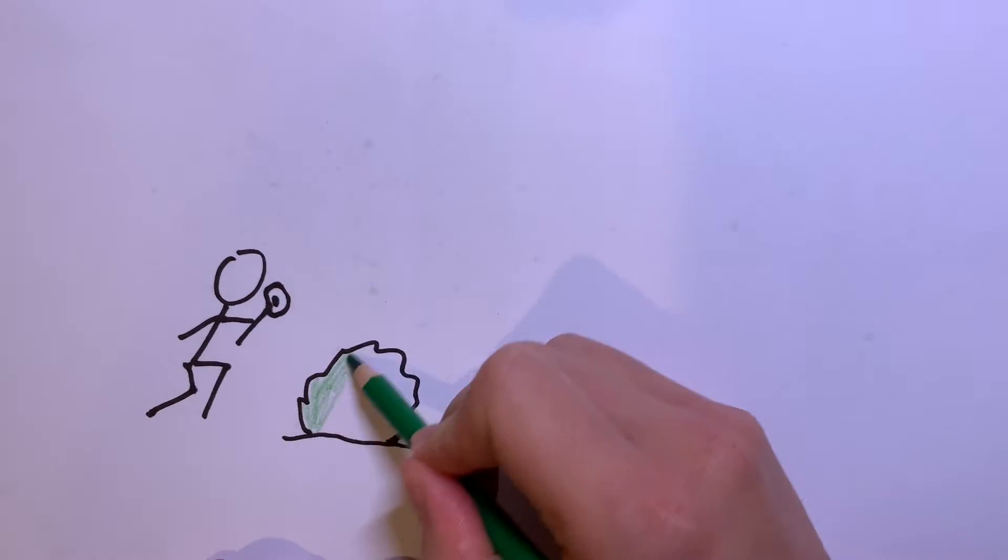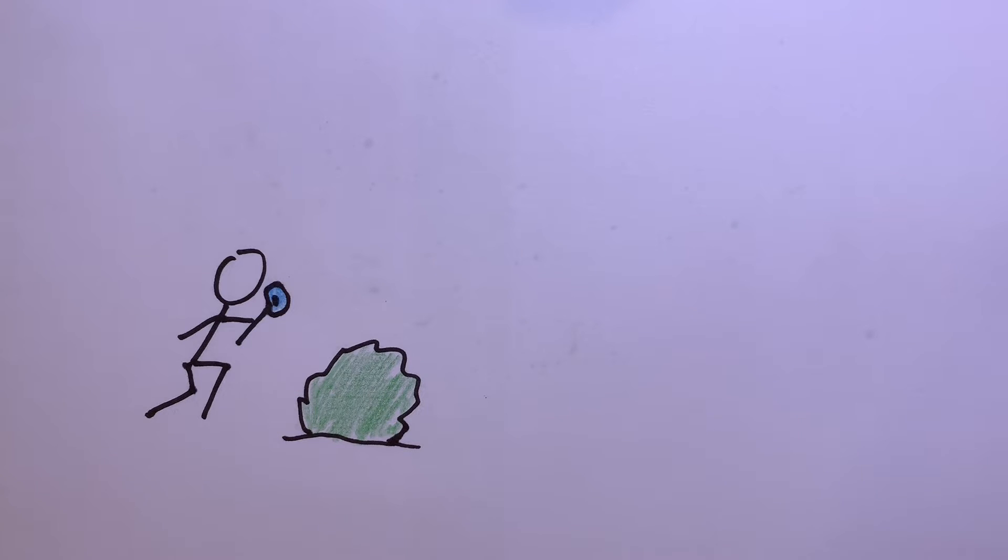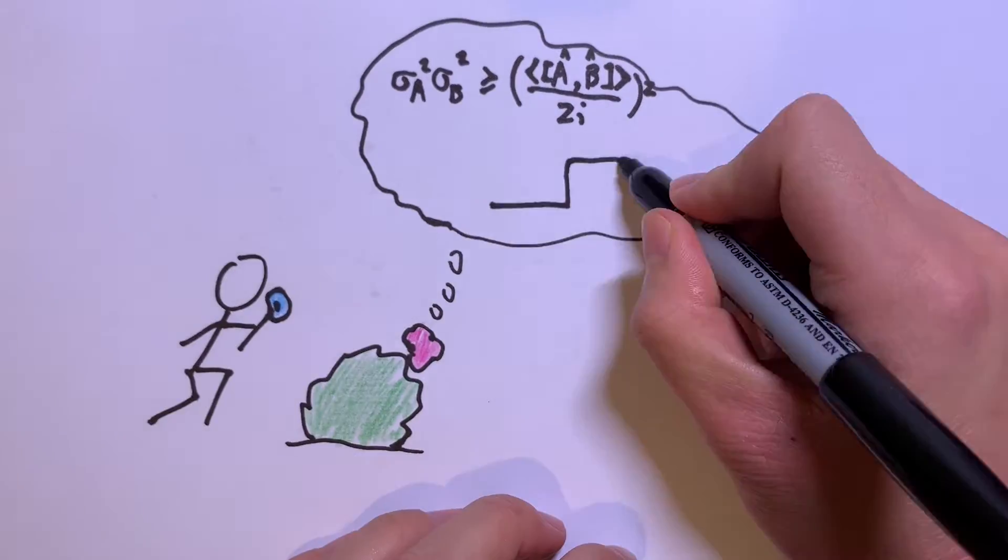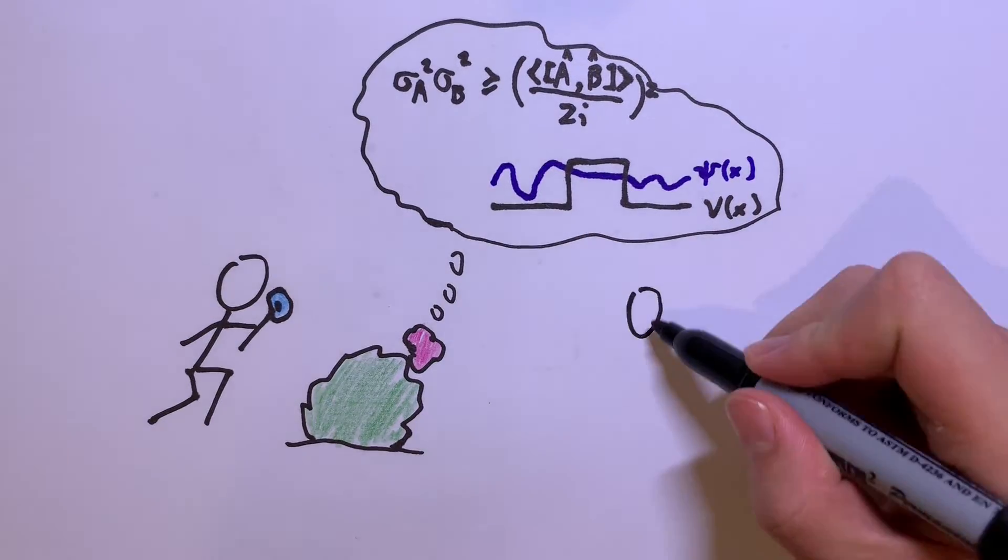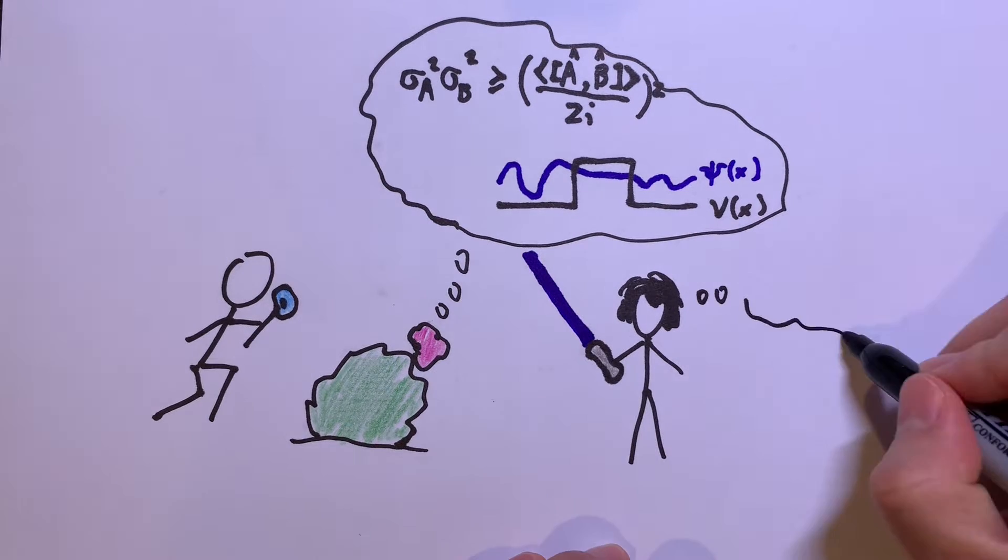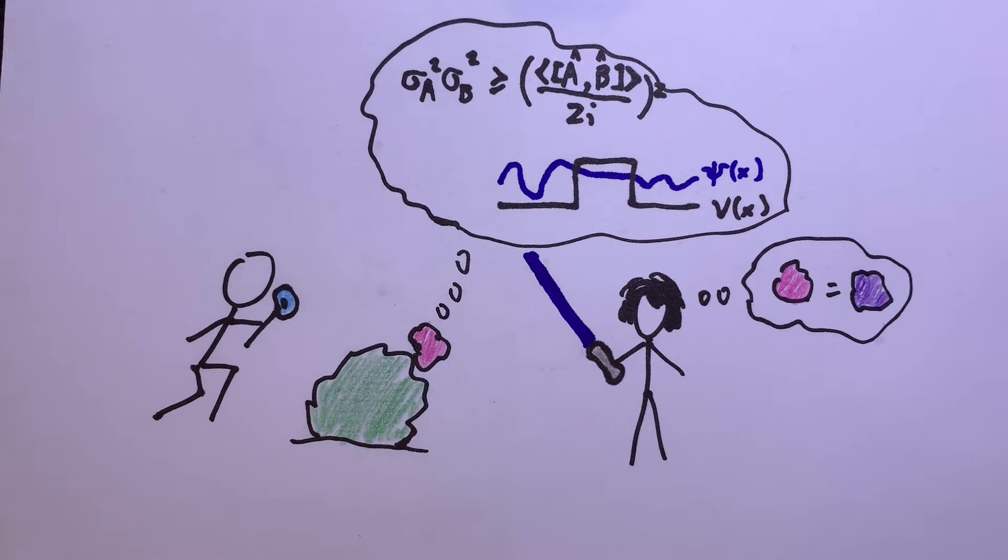After years of searching, you have finally discovered the rare magenta magic flower, which gives anyone who drinks its tea the magical ability to understand quantum mechanics. Excited, you show it to your friend Anakin. However, Anakin is colorblind. He thinks you merely have a purple poison flower.